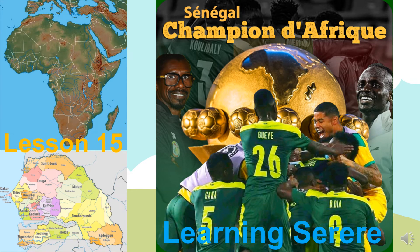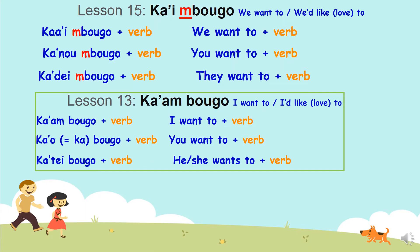A chiang serer. Lesson number 15. So today we will learn about the plural of kambugo. It's a follow-up of lesson number 13.